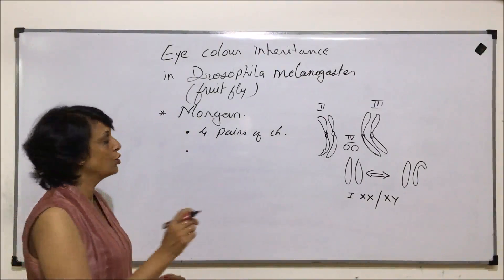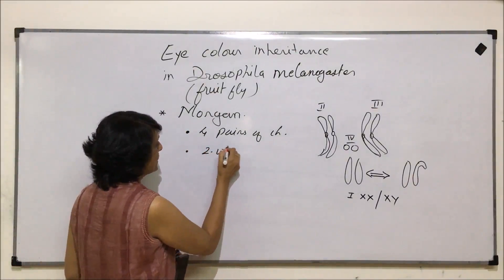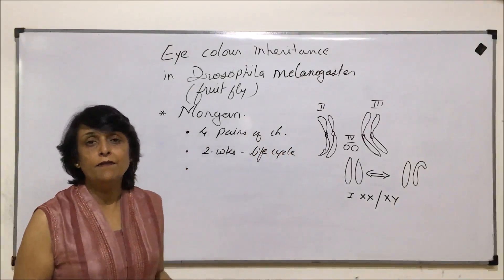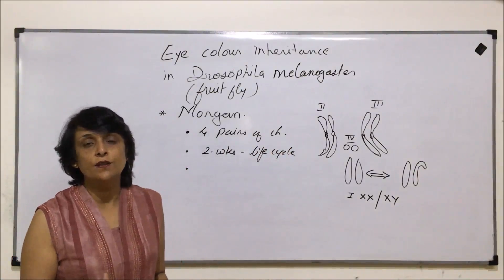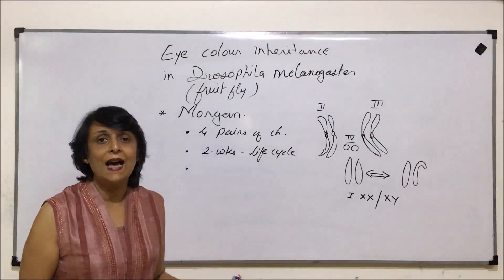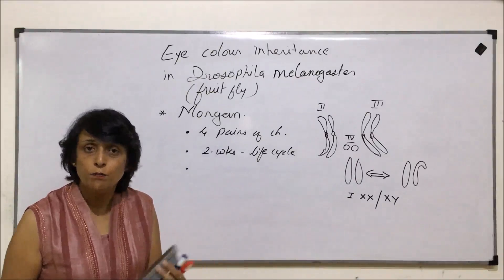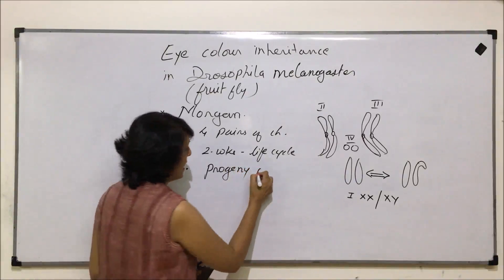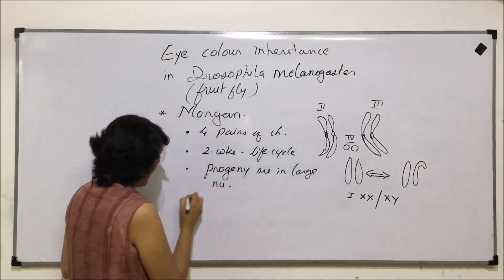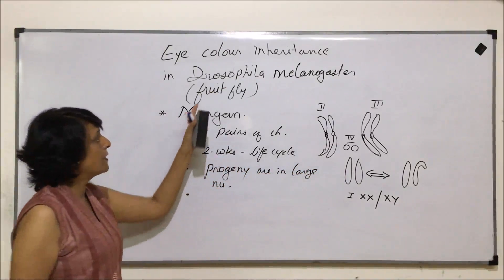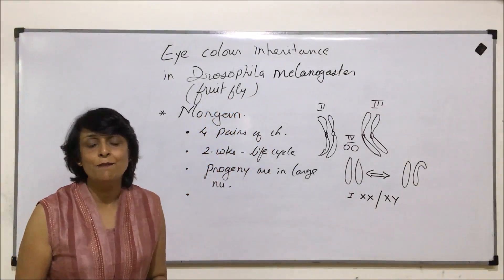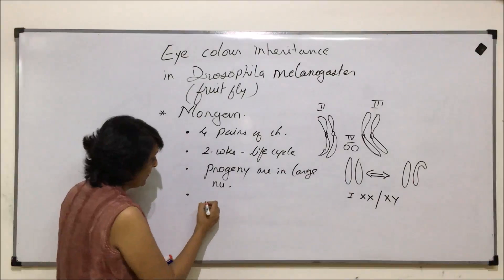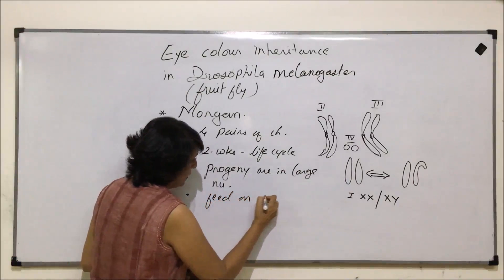The fruit fly completes its life cycle in a very short period of time — about two weeks. Third, every time fruit flies reproduce the next generation is in a big number; they lay a large number of eggs, so the progeny or offspring produced are in large numbers. They are found around ripened fruits, so to grow them in a lab we just need the pulp of a fruit for nourishment.